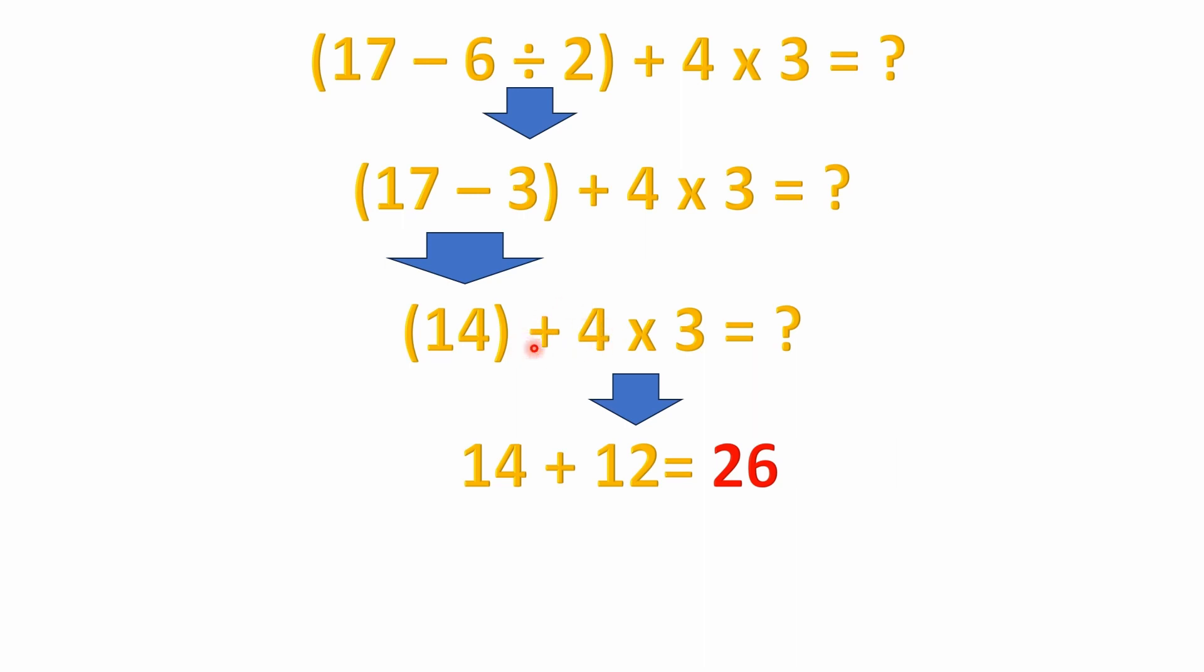But once again, remember, according to order of operations, your multiplication and division have precedence over addition. So we're not going to take 14 plus 4 and then multiply by 3. We're actually going to do the 4 times 3 first. 4 times 3 is 12. Then if we take 14 plus 12, then that equals 26.